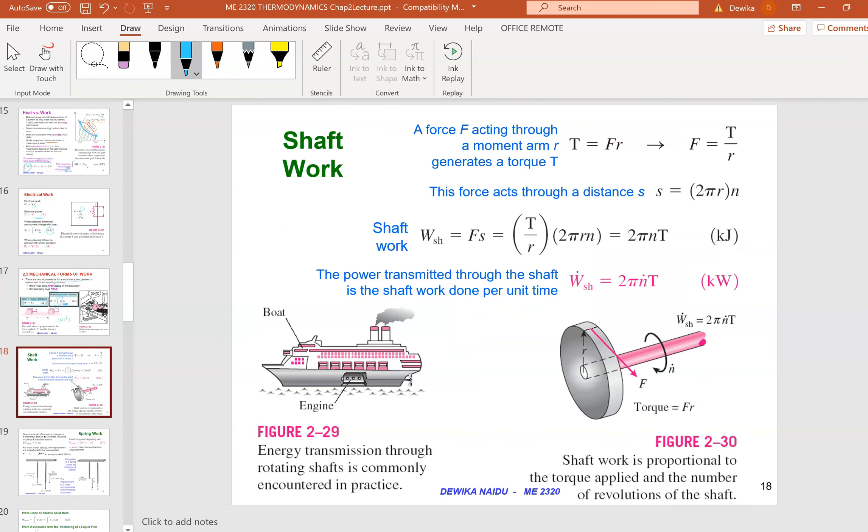Let's look at shaft work. Shaft work is given by force times distance, but what is the force? You have torque, which is force times distance. Remember rotation - force equals torque divided by r. Since s is actually 2πr, when you're rotating in a circular motion it is 2πr.